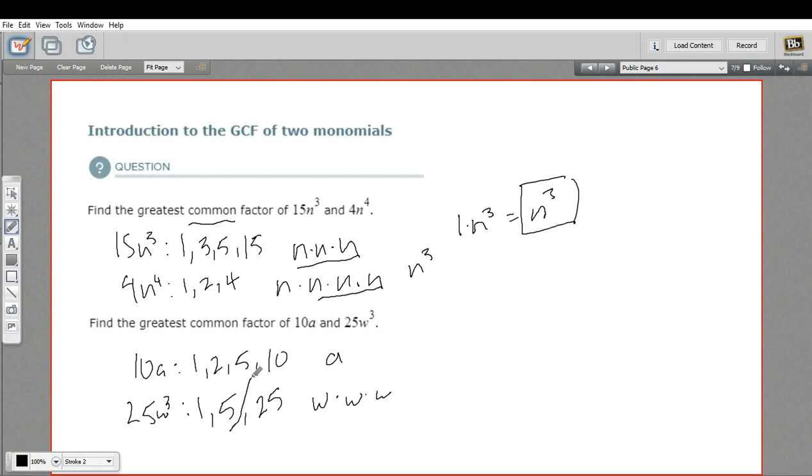Now, you can see on the number part, we've got a 5 in common. So there's a number we've got in common. How about the variable part? Here we've got an a, here we've got three w's. That is nothing in common. So this by itself, this 5, is the greatest common factor. The greatest thing that you could divide out of both of these evenly.